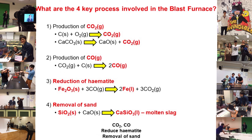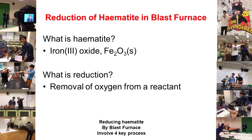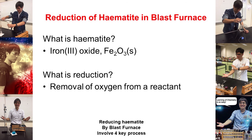CO2 is produced. CO reduces the metal oxide. Removal of sand. Reducing in blast furnace by blast burners involves 4 key processes: K, N, Fe.